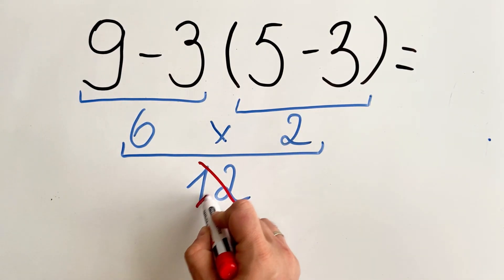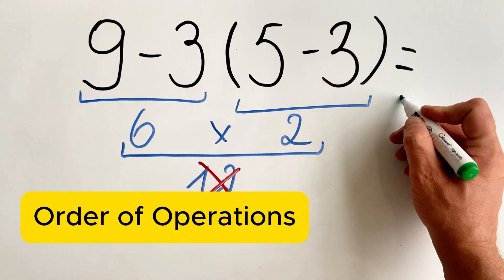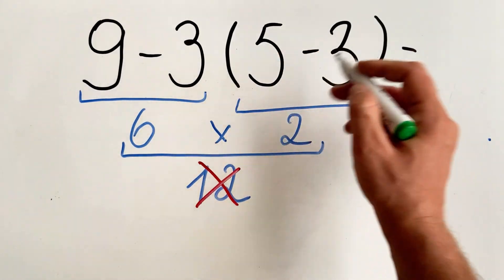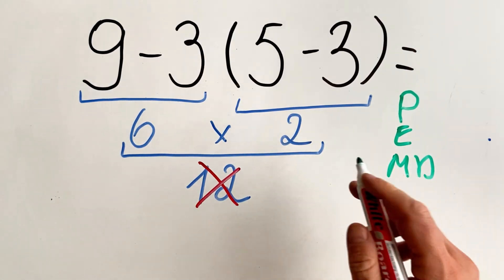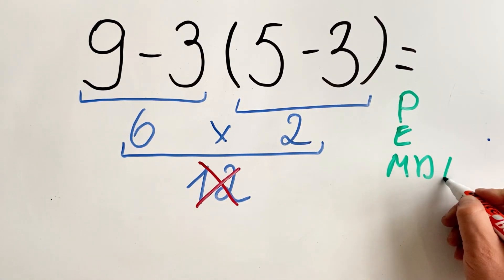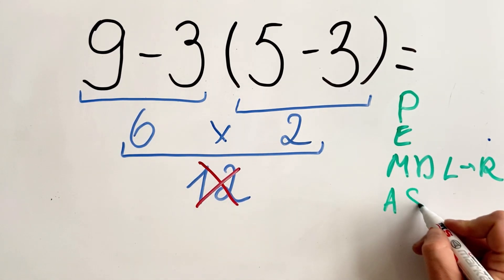But this answer is not correct because according to the order of operations we first must do what's inside the parenthesis, then exponents, then multiplication and division which needs to be done from left to right, and then addition and subtraction.